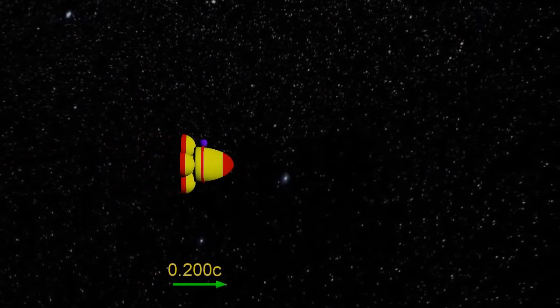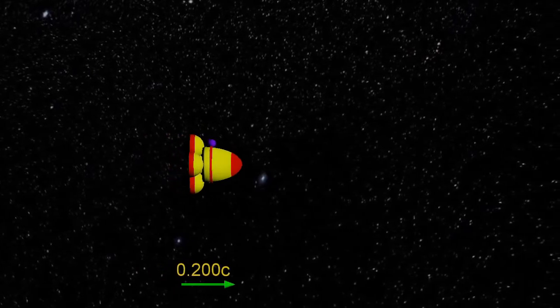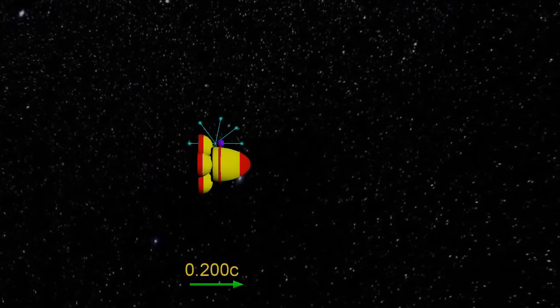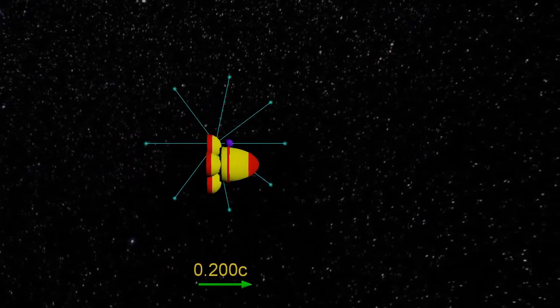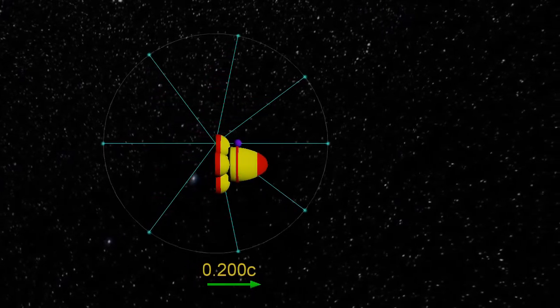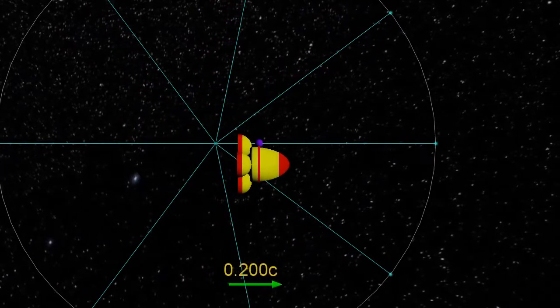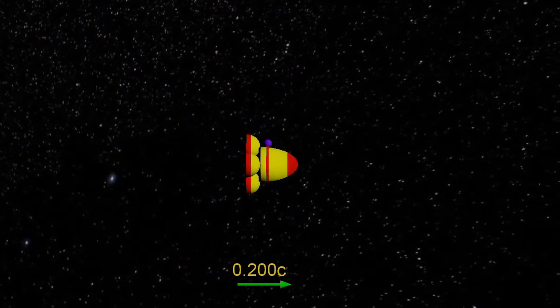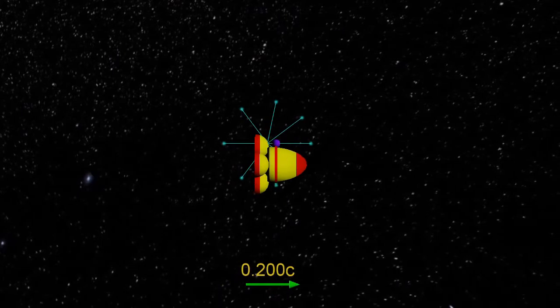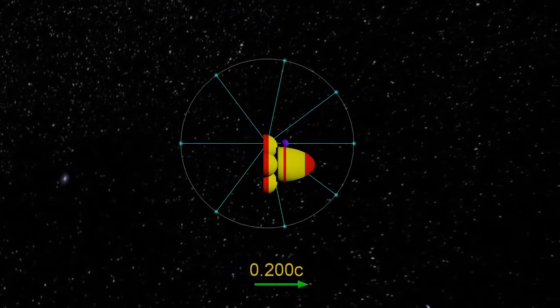With the spacecraft moving at 0.2c, the light flashes and all the photons move out at c. Once again, they all lie on a circle. However, now the distribution of the photons around the circle is not even. There is a slight concentration in the direction of motion of the spacecraft.